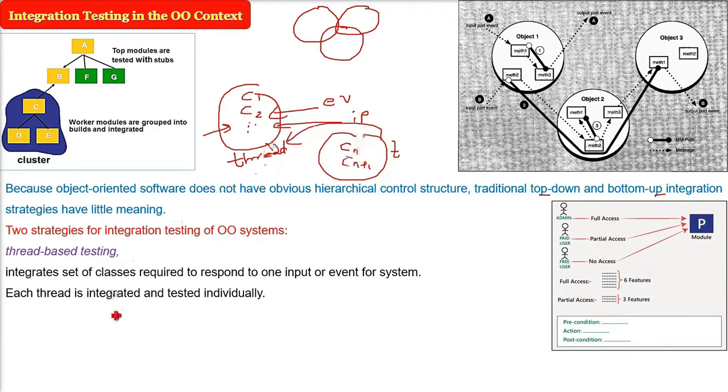Thread one, thread two will be tested individually. Then we will do regression testing also, because when we combine certain things, there should not be any side effect. So this is thread-based testing, one of the strategies of integrated testing for object-oriented.